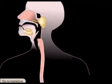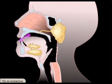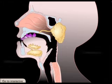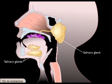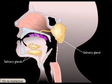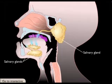Digestion begins in the mouth, where the teeth break food into smaller particles during mastication. Salivary glands, located near the oral cavity, secrete saliva, which begins chemical digestion and keeps the food moist.